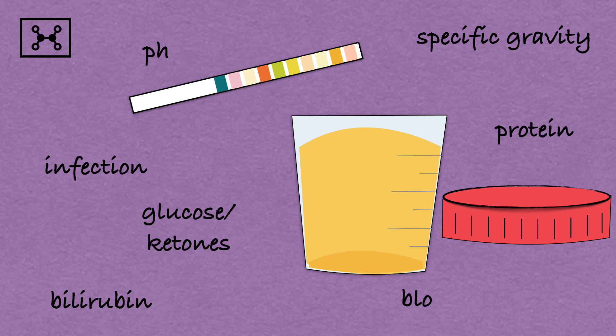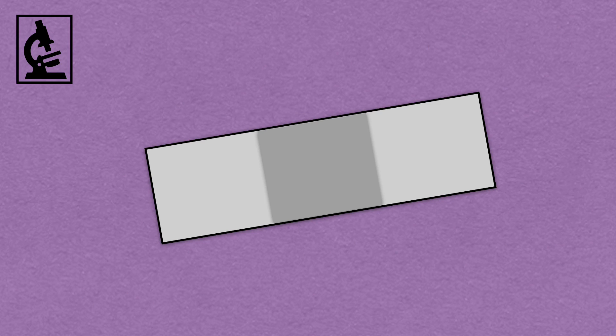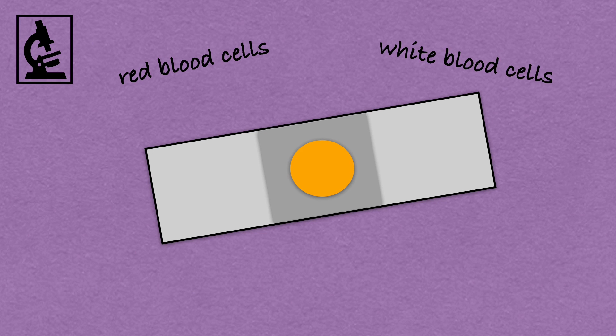The microscopic exam involves viewing drops of urine under a microscope, and if any of the following levels are above average, additional testing are required. Red blood cells show the presence of blood in urine. White blood cells, bacteria, yeast or parasites are all signs of an infection. Casts are tube-shaped proteins that indicate kidney disorder, and crystals are formed from chemicals in urine and might be a sign of kidney stones.